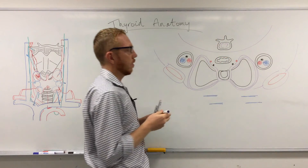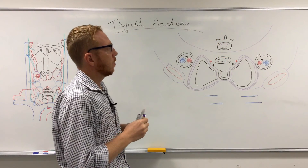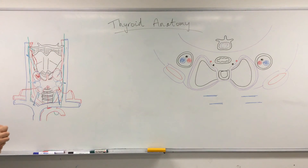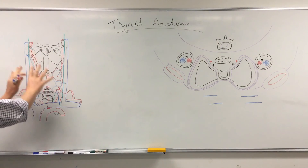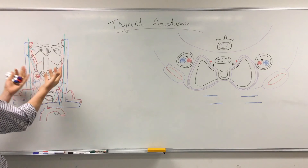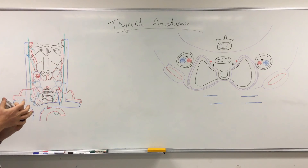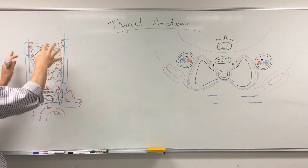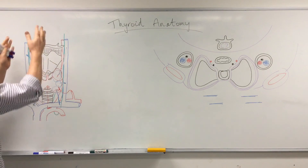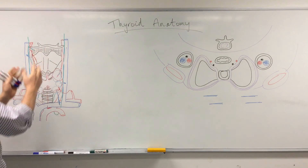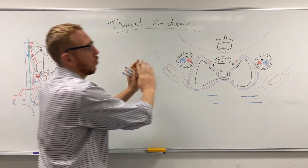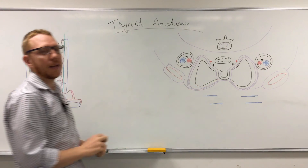That is essentially the anatomy of the thyroid. We've covered where it is located in the body, its relations and surrounding structures, its arterial supply, venous drainage, and nerve relations — all viewed in both an anterior and a transverse plane.